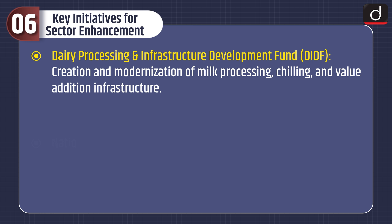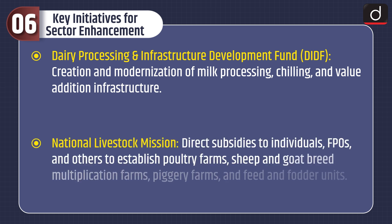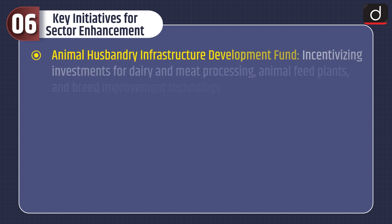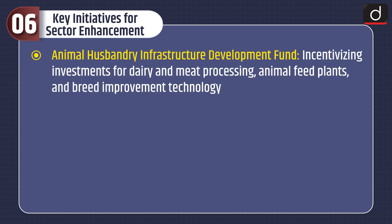Key initiatives for sector enhancement include the National Livestock Mission, which provides subsidies to individuals, FPOs, and others to establish poultry farms, sheep and goat breed multiplication farms, piggery farms, and feed and fodder units. The Animal Husbandry Infrastructure Development Fund incentivizes investments for dairy and meat processing, animal feed plants, and breed improvement technology.